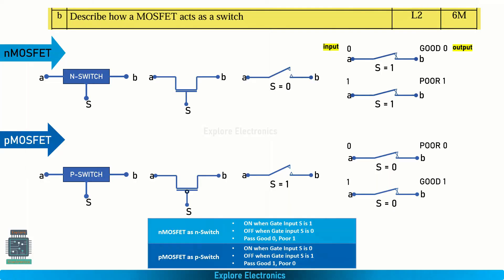Then comes: describe how MOSFET acts as a switch. This is also a very important topic. Both N MOSFET and P MOSFET are shown. If the N MOSFET gate is connected with logic 1, it will be ON. When the gate is connected with logic 0 or 0 volts, the transistor will be OFF. So when S — the gate input — is 0, the transistor is OFF; we call it an open switch.